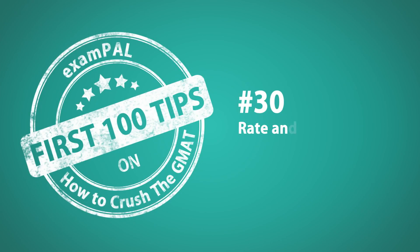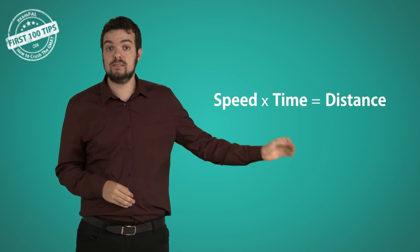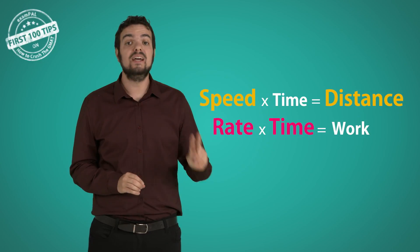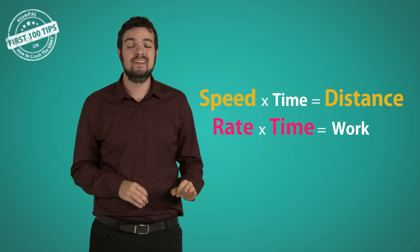Number 30. Rate and work in data sufficiency. Since data sufficiency questions revolve around logic, when it comes to rate and work, we'll look for the rule of three. Speed time and distance, or rate time and the amount of work, we must know two in order to find the third. And we don't need to calculate anything.